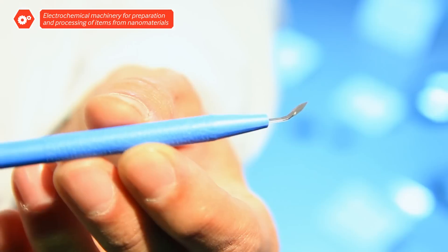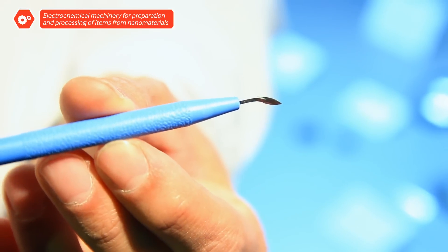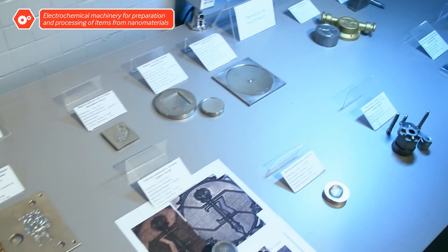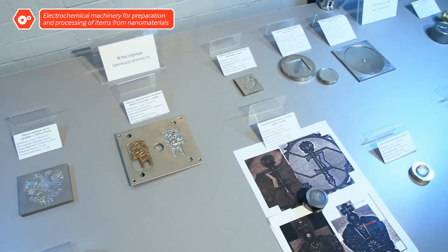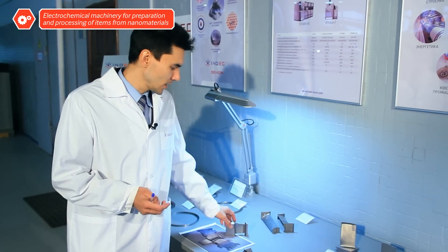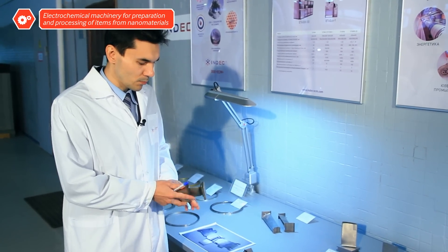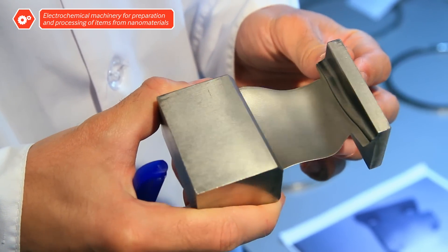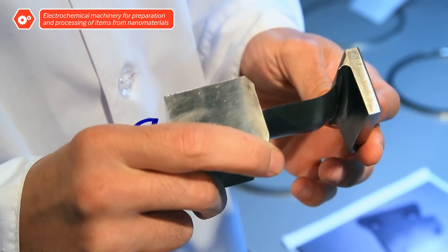Electrochemical machinery is able to achieve this level of exactitude. Electrochemical machines also produce items of complex shape for gas turbine engines, blades for example. Blades whose form resemble potato chips can only be produced with electrochemical processing.